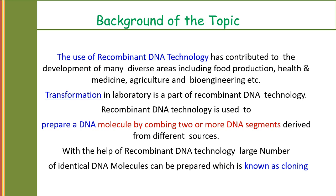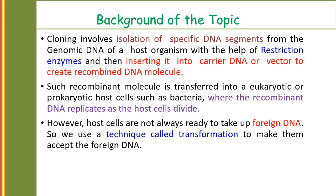Recombinant DNA technology is used to prepare a DNA molecule by combining two or more DNA segments derived from various sources. With the help of this technology, a large number of identical DNA molecules can be prepared, which is also known as cloning. Cloning involves the isolation of specific DNA segments from the genomic DNA using restriction enzymes, which cut the DNA at specific sequences, and then inserting it into a carrier DNA or a vector to create a recombinant DNA molecule. Such a recombinant molecule is transferred to a eukaryotic or prokaryotic host cell such as bacteria, where the recombinant DNA replicates as the host cell divides. However, the host cells are not always ready to take up the foreign DNA, so we use a technique called transformation to make them accept it.